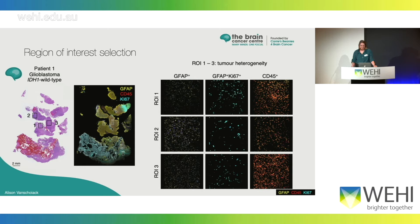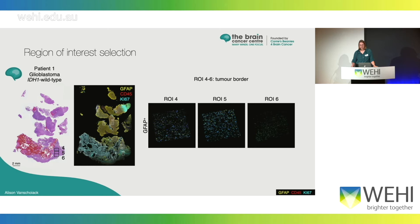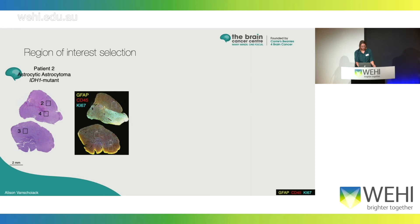I'll take you through some of the regions of interest selected for these two tumours. On the left is an H&E of the glioblastoma IDH1 wild type patient sample. Regions of interest one to three were of interest because they had a lot of immune infiltration, as you can see from the CD45 segmented staining, but they were also identified by the pathologist as having properties of heterogeneity. We were also able to select regions adjacent to normal brain, so that we could identify properties of normal cells at that tumour-normal border.